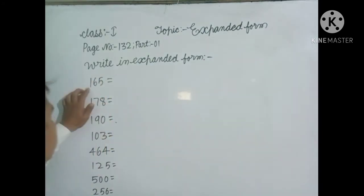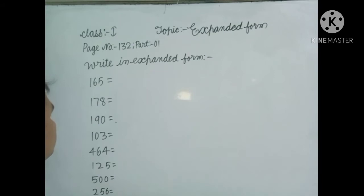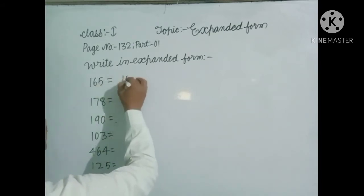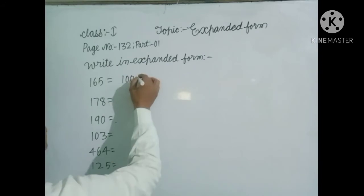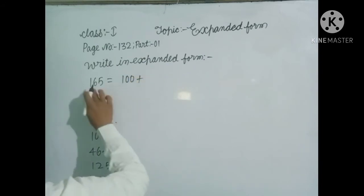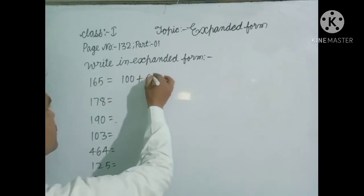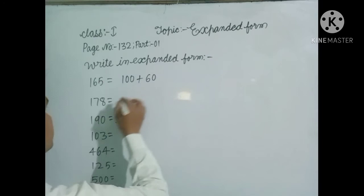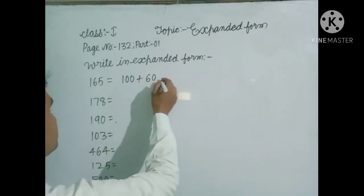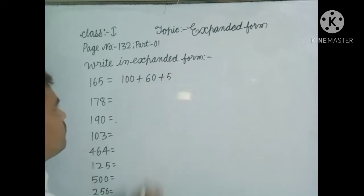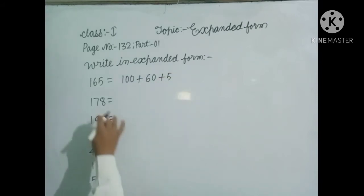In the first question, the hundreds digit is 1, so write down 100. The tens digit is 6, so write down 6 tens, that means 60. And the ones digit is 5, so write down 5.